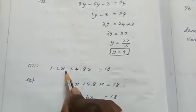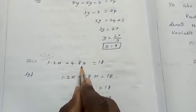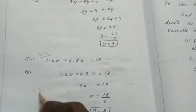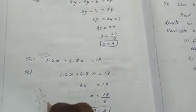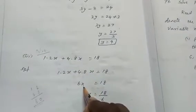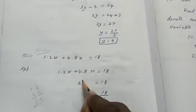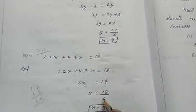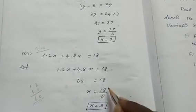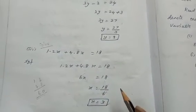The next example: Solve 1.2x + 4.8x = 18. Adding the like terms: 1.2 + 4.8 = 6.0, so 6x = 18. To find x, dividing both sides by 6: x = 18 ÷ 6 = 3. So the solution is x = 3.